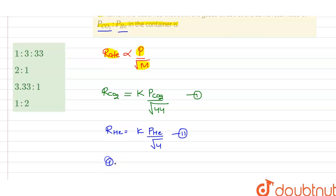We have to find the ratio of pressure of CO2 to He. So on dividing first equation with second equation, we will get that rate of CO2 to rate of He equals PCO2 over root 44.